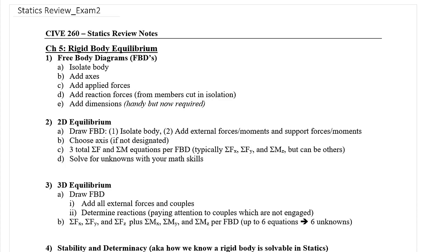Free body diagrams, while they were on exam one, we're going to need to draw them for every single equilibrium problem in statics, so they'll be included on exam two as well. The steps to draw a free body diagram are: isolate the body — draw it separate from your problem sketch — then add your axis system, all applied forces, and replace everything you cut away with forces and couple moments from those supports. Dimensions are optional.